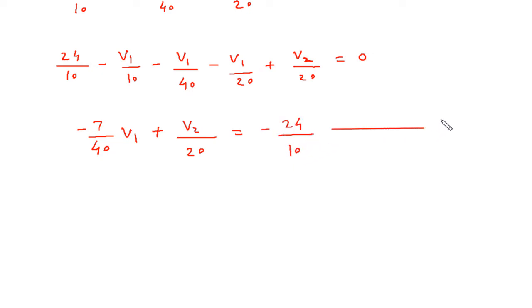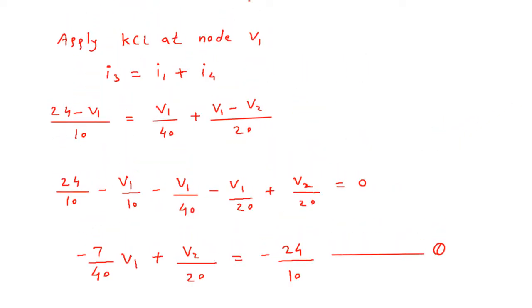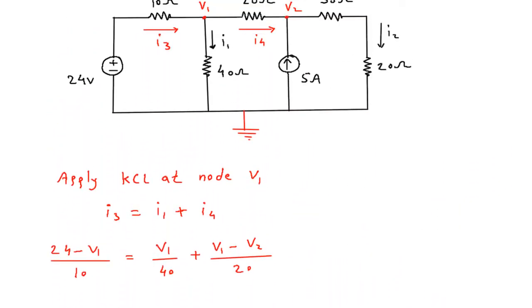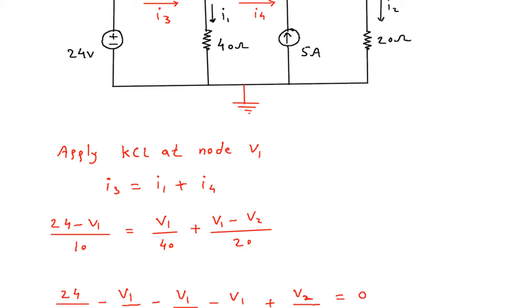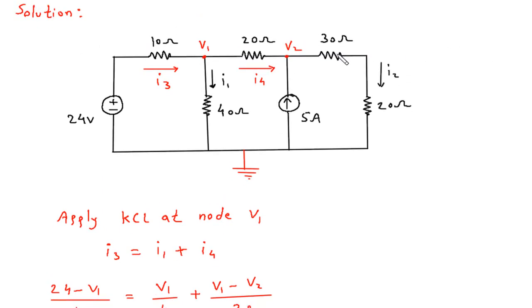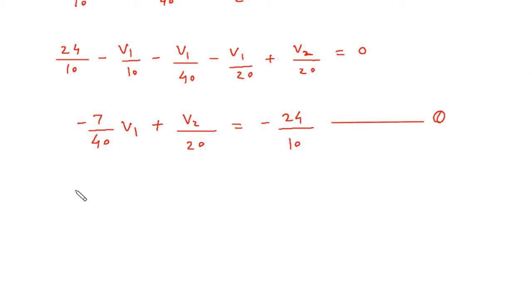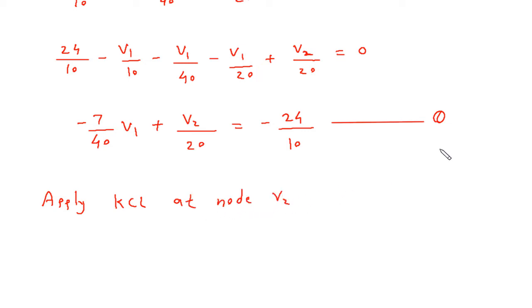Let's say this is equation number 1. Now we will apply KCL at node V2.